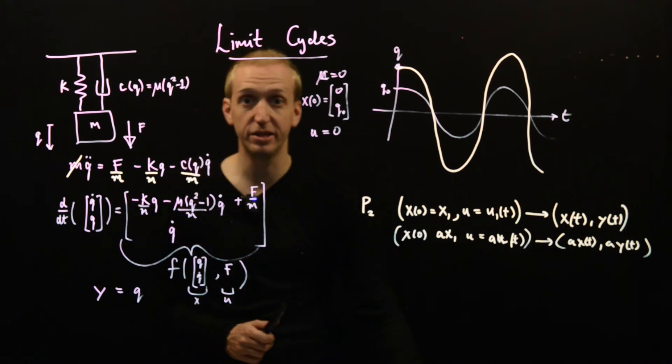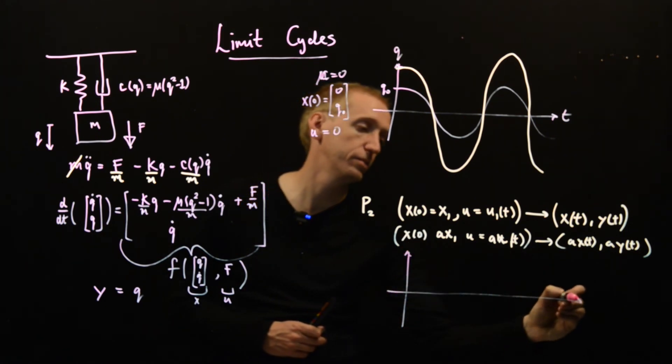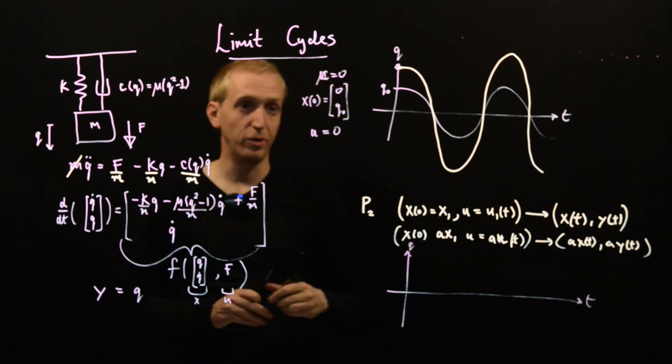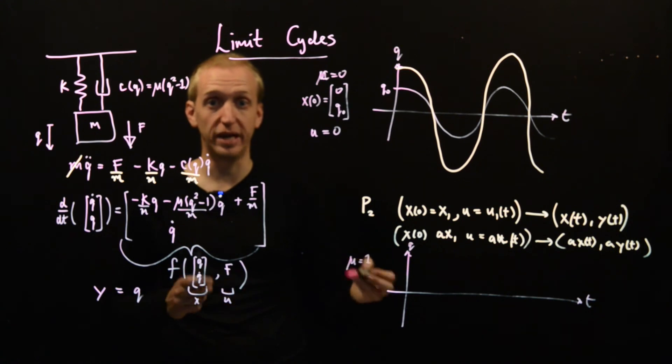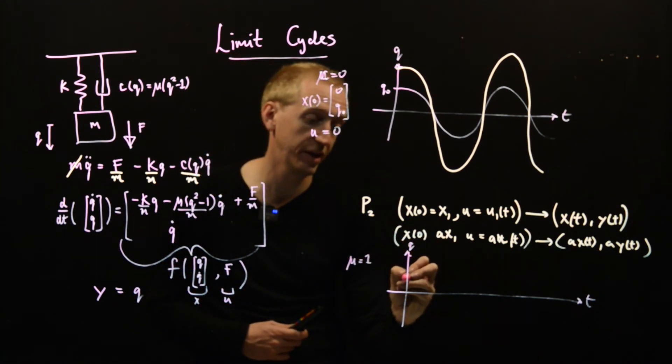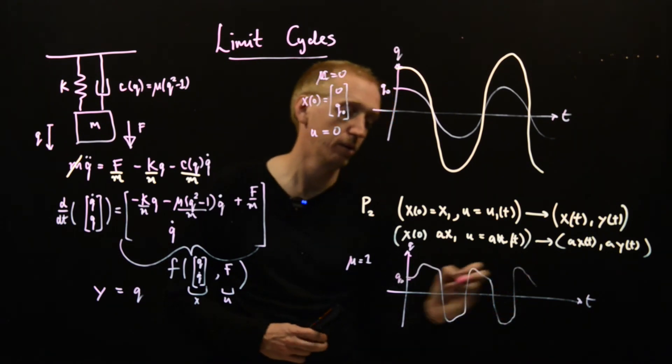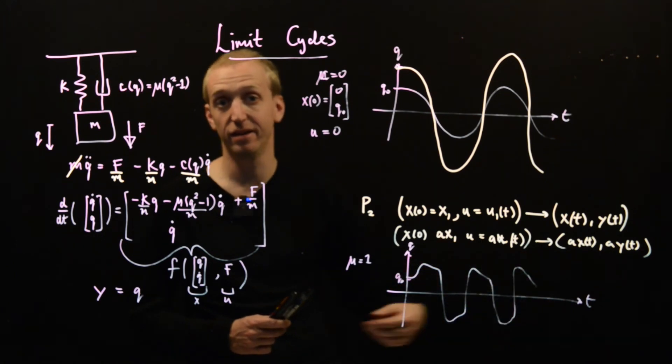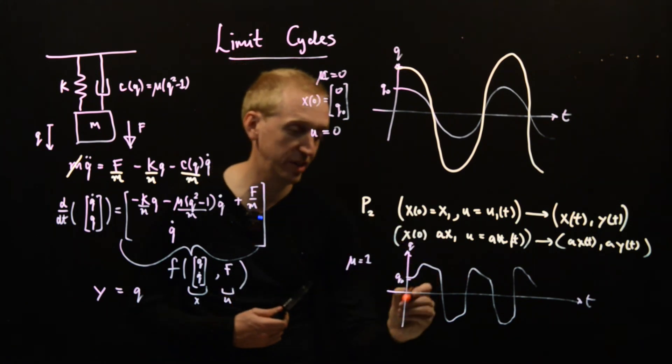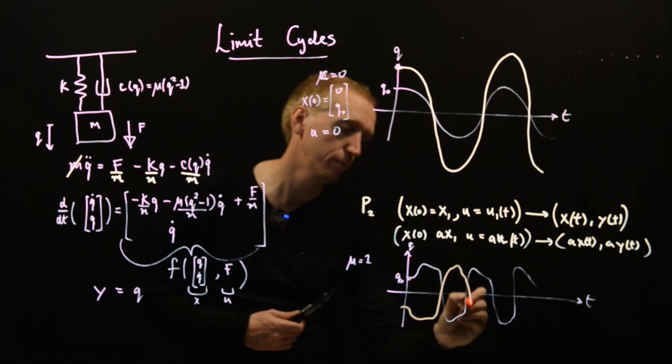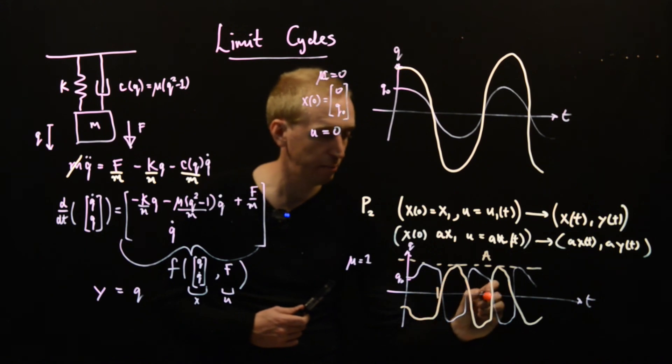If you simulate this system, you get the limit cycle that we saw before. So if we do the same thing, we have the same initial condition and same input but now we have mu is equal to 1, then instead we do get this stable periodic behaviour. So given our initial condition q0, it slips into this sinusoid-like periodic solution. So it's not a pure sinusoid, it's sort of messed around a little bit in the peaks but it's periodic. And no matter where we start, we settle into the same periodic solution, which critically has the same amplitude and the period is the same. So that's what a limit cycle is.